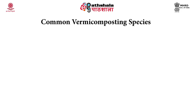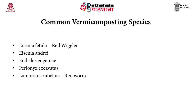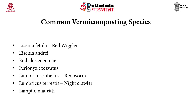The common species used for vermicomposting are Eisenia fetida, also called red wigglers; Eisenia andrei; Eudrilus eugeniae; Perionyx excavatus; Lumbricus rubellus, called redworms; Lumbricus terrestris, called nightcrawlers; and Lampito mauritii. Among these, Eisenia fetida and Eudrilus eugeniae are widely used at commercial level for the purpose of vermicomposting.